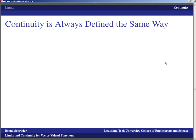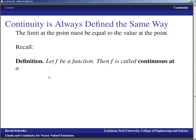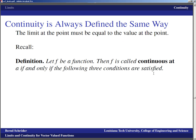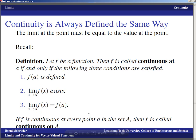Now let's talk about continuity. We're going to link the definition of continuity to the definition you already know, because continuity is always defined the same way: the limit at the point must equal the value at the point. Recall: a function F is called continuous at A if and only if three conditions are satisfied — F of A is defined, the limit as X goes to A of F of X exists, and the limit as X goes to A of F of X equals F of A. If F is continuous at every point in a set A, then F is called continuous on A.